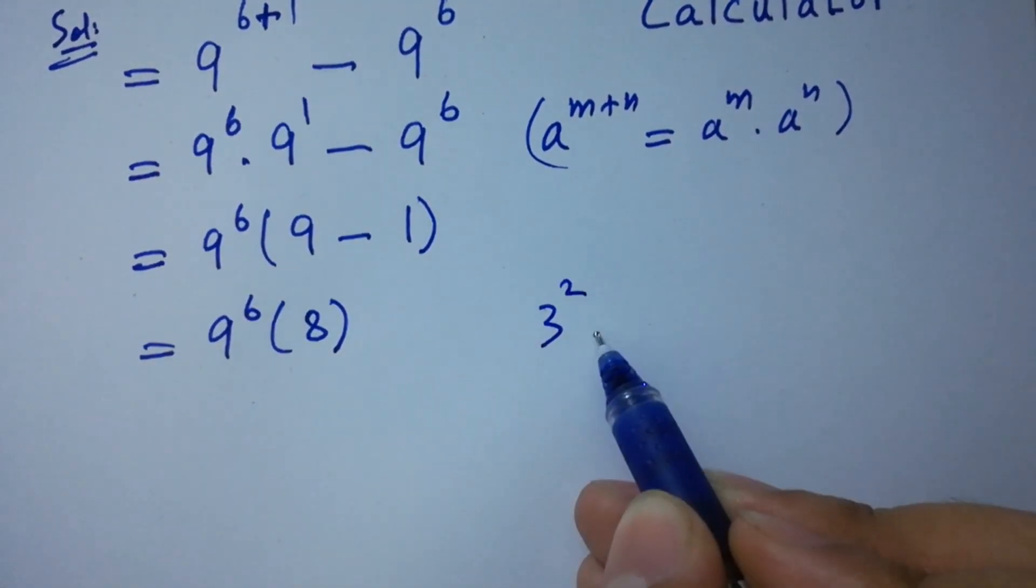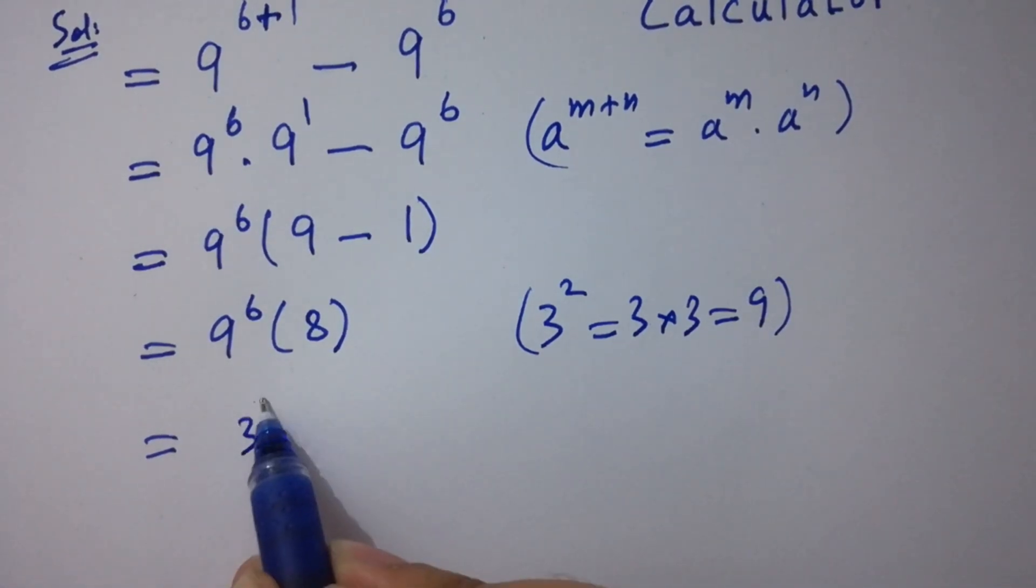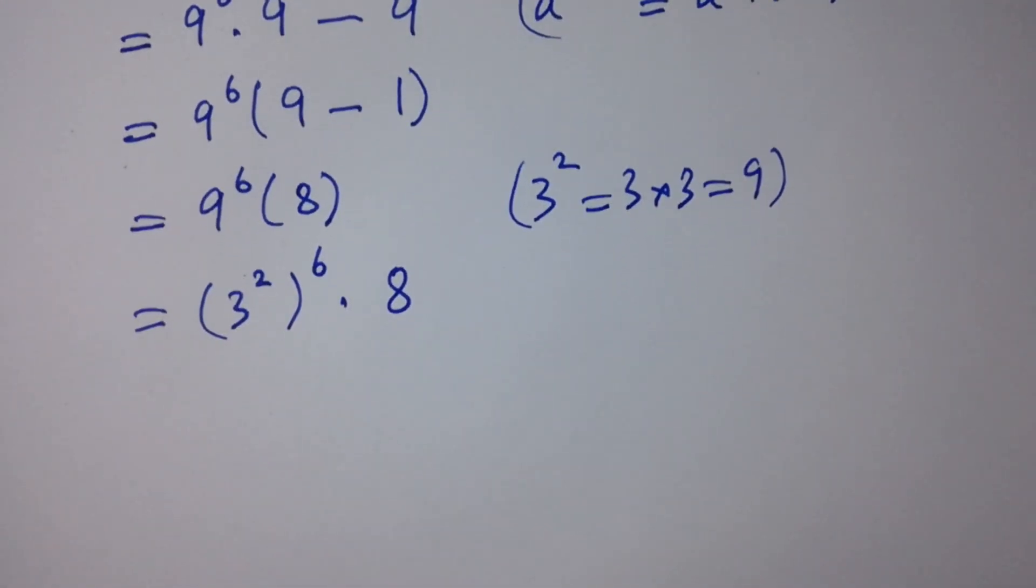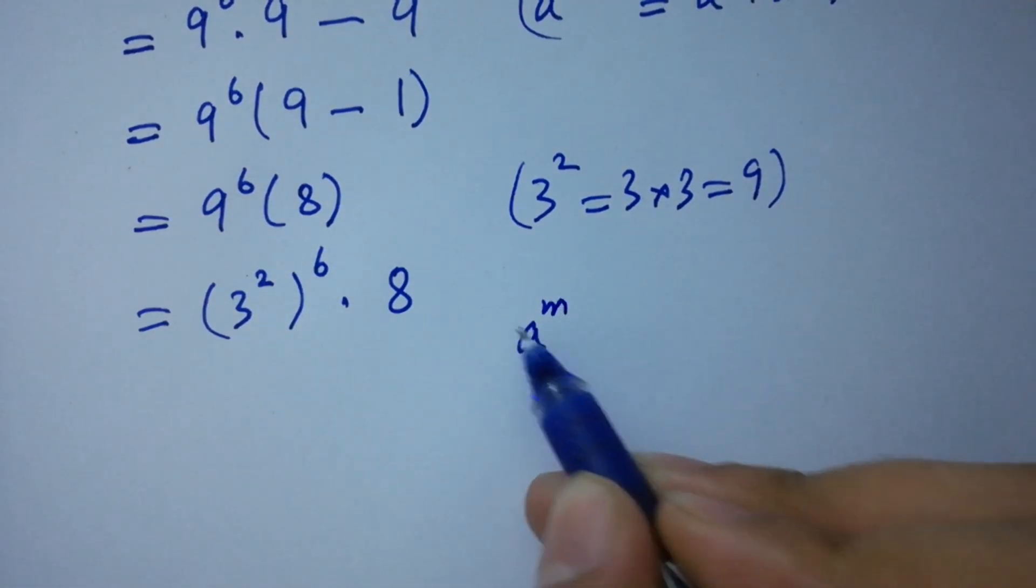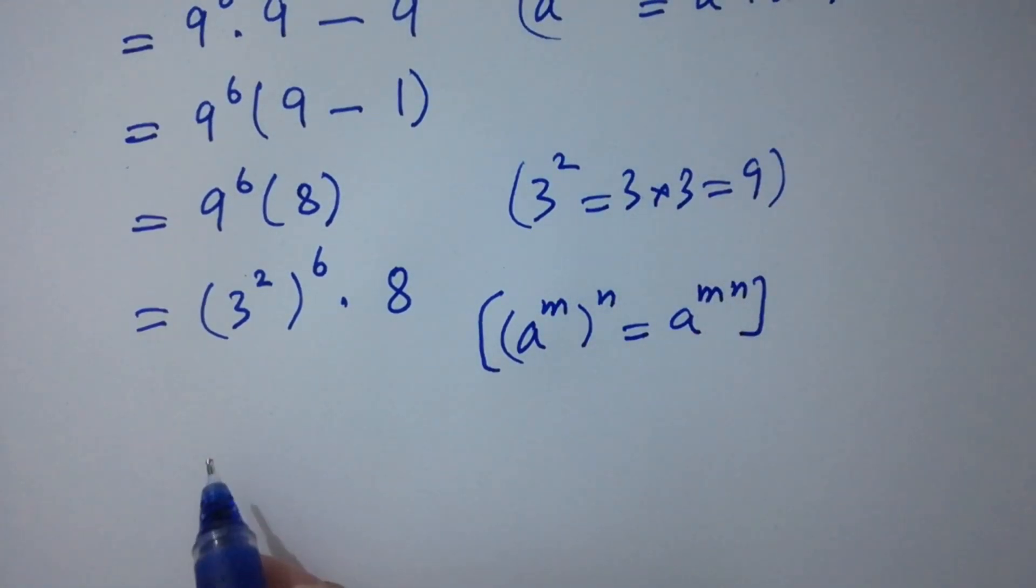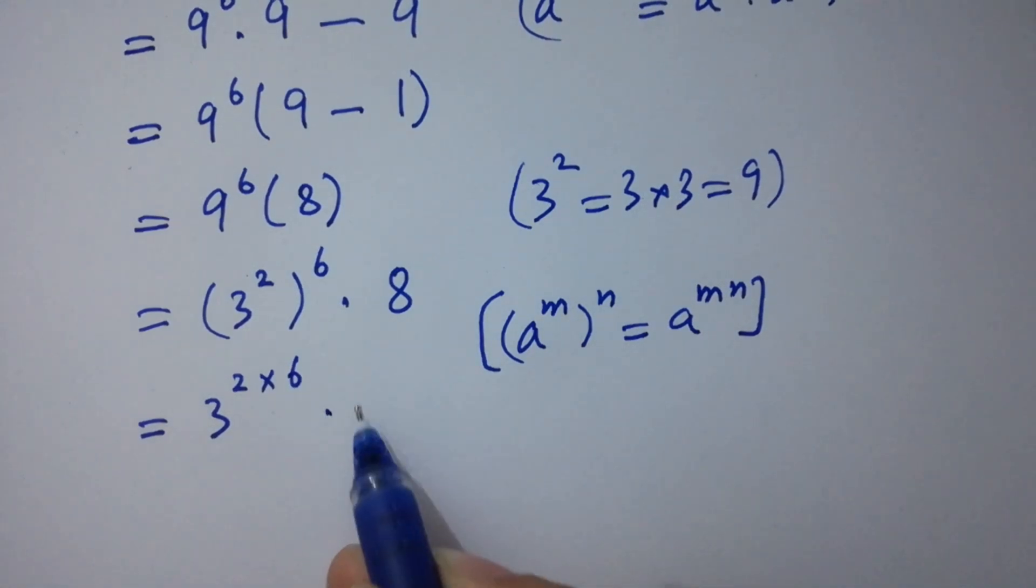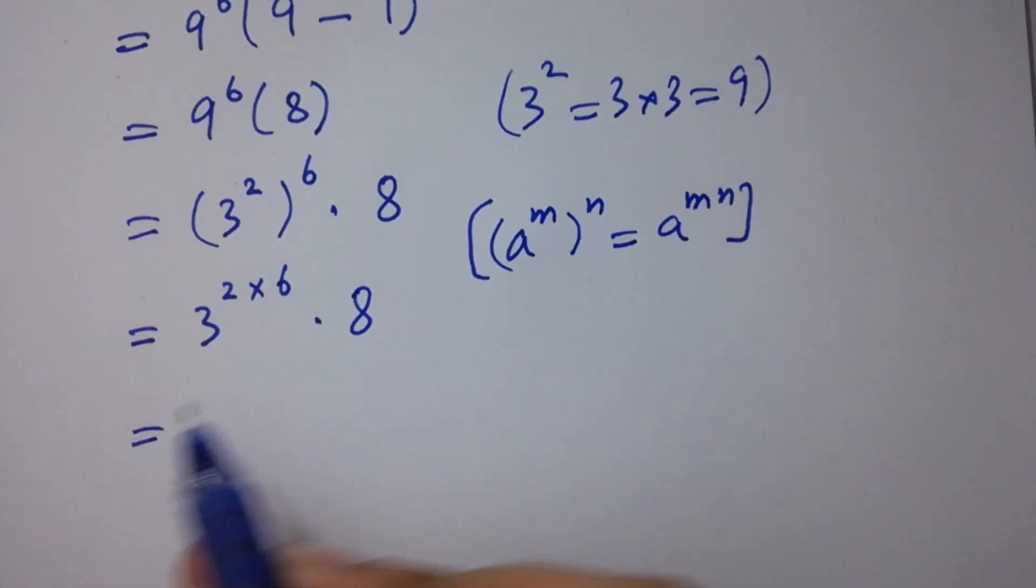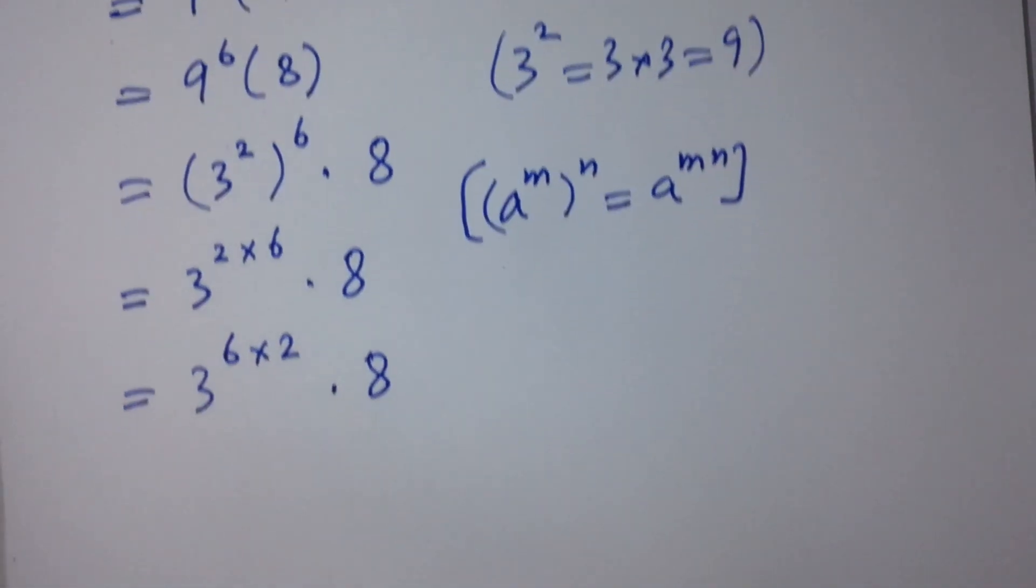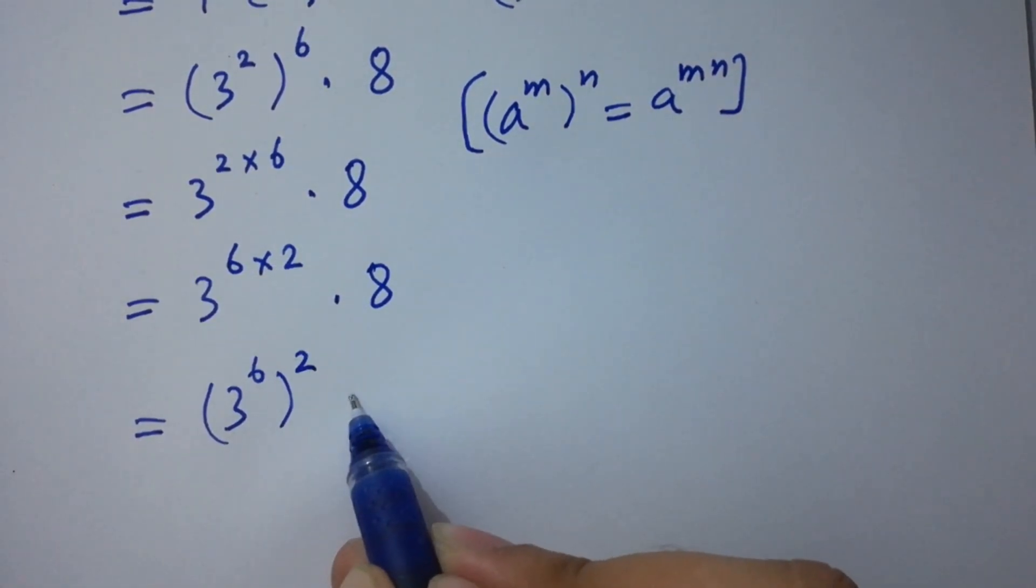As 3 square equal to 3 times 3, 9 is 3 square to the power 6 times 8. Using a to the power m to the whole power n equal to a to the power mn, it will be 3 to the power 2 times 6 times 8, which is same as 3 to the power 6 times 8, or 3 to the power 6 to the whole power 2 times 8.